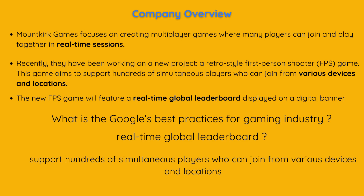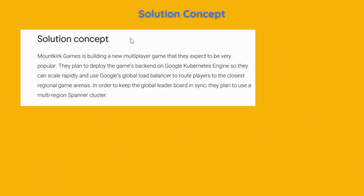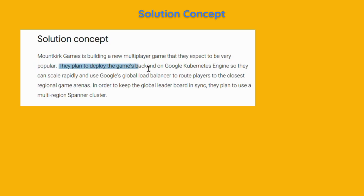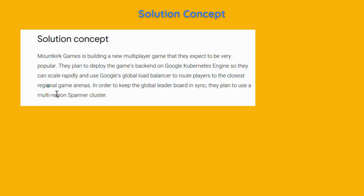Let's continue with the solution concept. Mount Kirk Games is building a new multiplayer game that they expect to be very popular. They plan to deploy the game's back-end on Google Kubernetes Engine so they can scale rapidly, and use Google's global load balancer to route players to the closest regional game arenas. In order to keep the global leaderboard in sync, they plan to use a multi-region Spanner cluster.